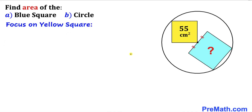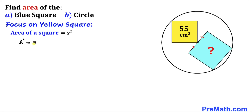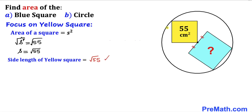Let's get started with the solution. Focusing on the yellow square, we want to calculate its side length. Recalling the area of a square formula: area = s², where s is the side length. Our area is 55, so s² = 55. Taking the square root of both sides, the side length s = √55. So each side of the yellow square is √55.